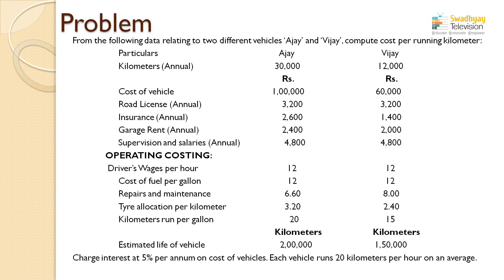The cost of each vehicle is given: Ajay's vehicle costs 1 lakh rupees and Vijay's costs 60,000 rupees. Annual expenses are also given — road license, insurance, garage rent, supervision and salary. These four expenses are generally paid annually by any transport company, whether running passenger or goods transport. Road license is 3,200 rupees each, and other expenditure values are also mentioned.